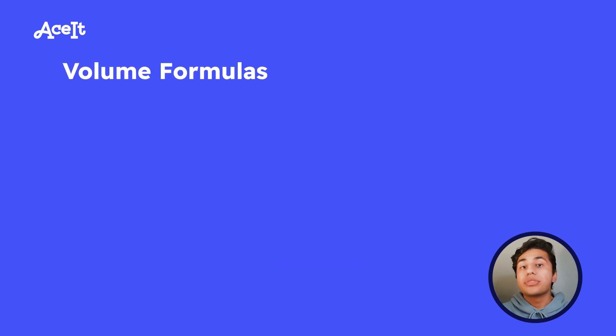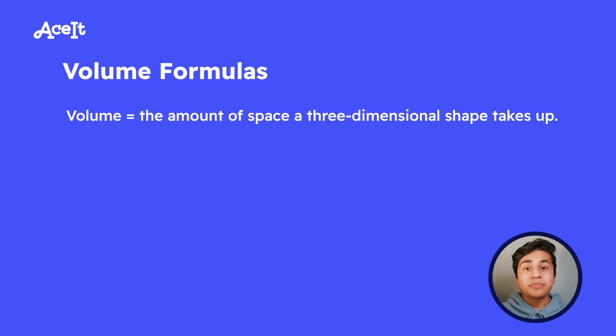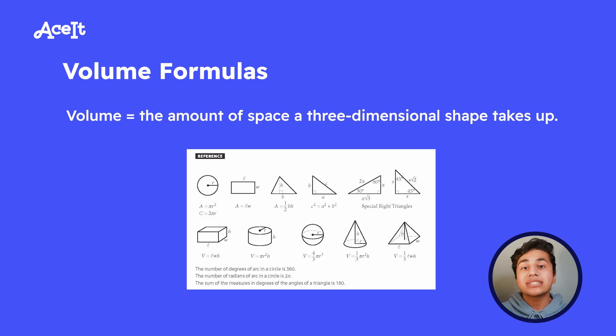All right, so that's it for the two-dimensional shapes. So let's move on to the 3D or three-dimensional shapes. The amount of space a three-dimensional shape takes up is known as the shape's volume. And once again, volume formulas are a little bit more complicated, but they're going to be on your SAT formula sheet. Or if they're not there, the problem will probably tell you the formula if it's not on the sheet.